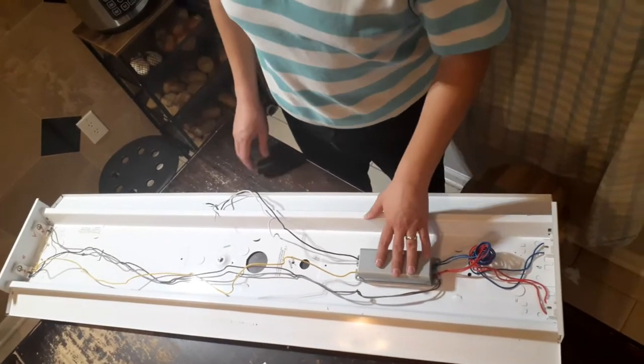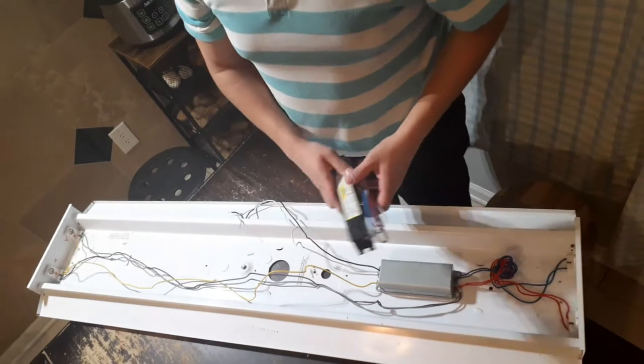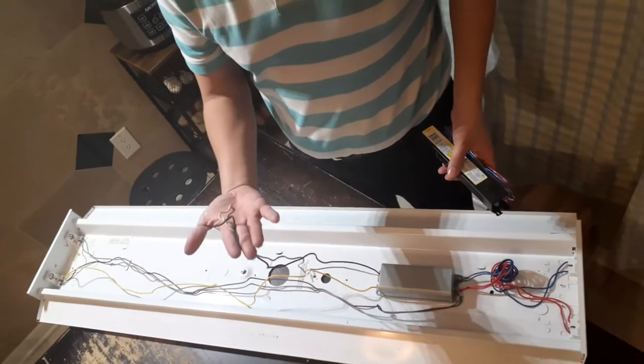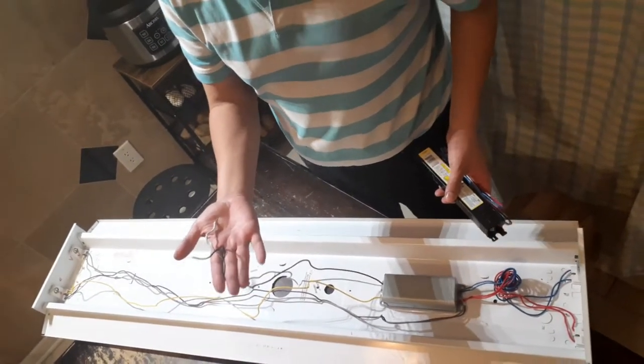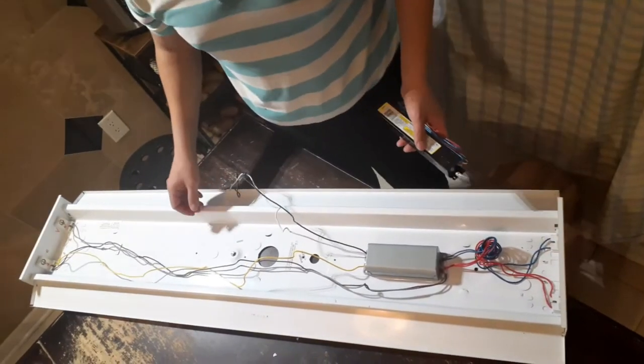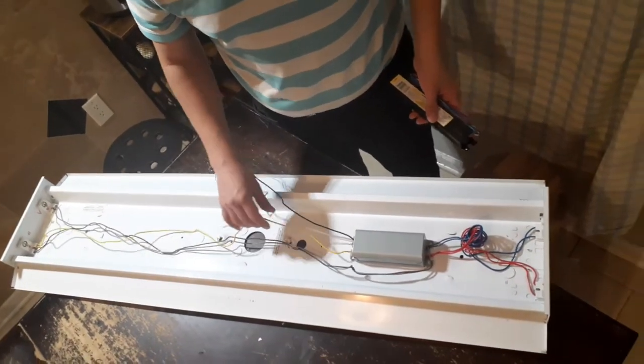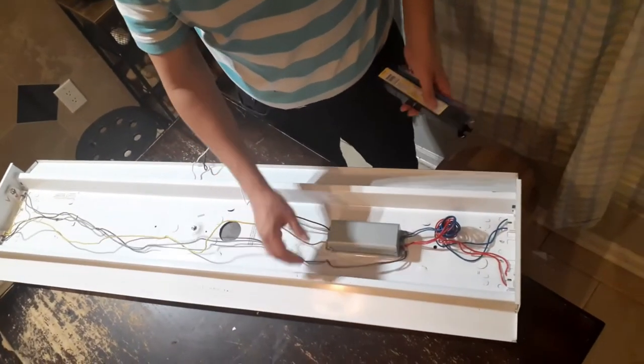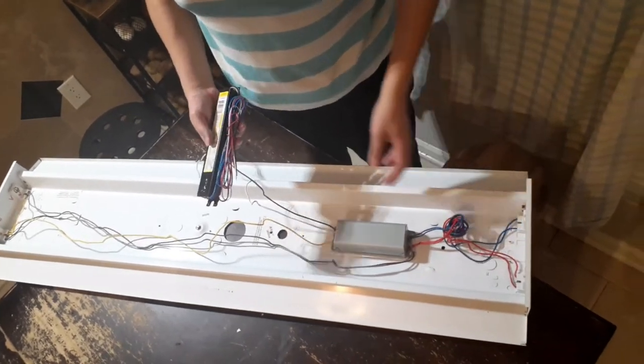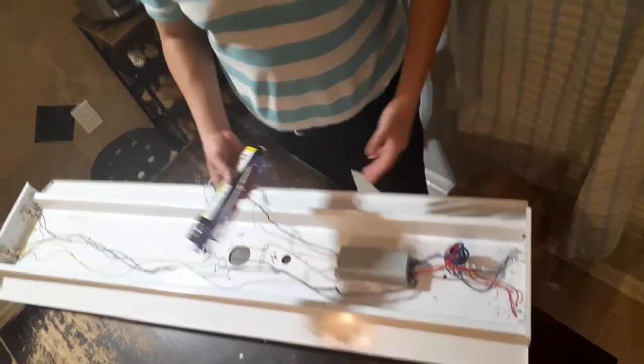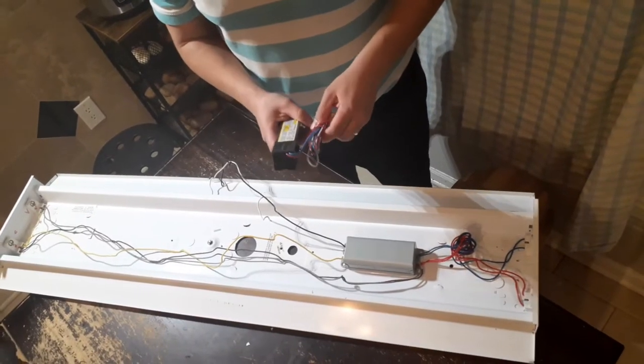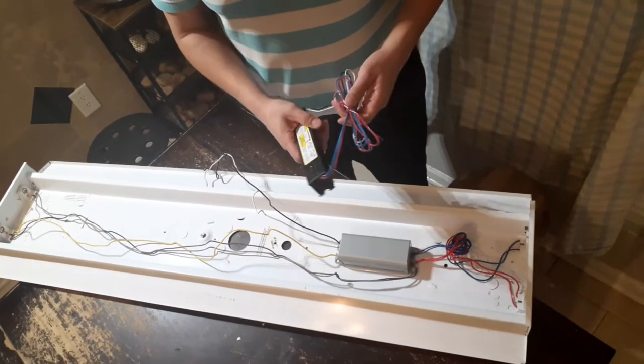Okay, so this is the old ballast. This is the new ballast. You've got the black and the white lead in from the power. And then you've got this yellow cable and then you've got this red and a green and a blue and two reds. I'm not really sure how that's wired, but we're going to wire it to how the diagram specifies.